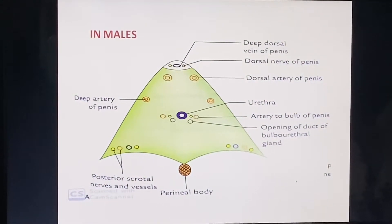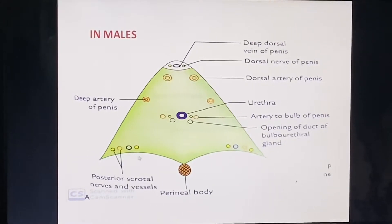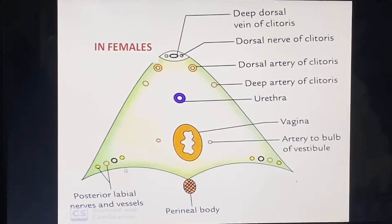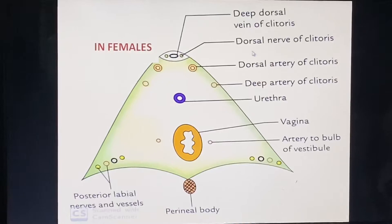In males, structures piercing the perineal membrane include: dorsal artery of the penis, urethra, artery to the bulb of the penis, opening of the duct of the bulbourethral gland, posterior scrotal vessels and nerves, and deep artery of the penis. Through the anterior gap: deep dorsal vein of the penis and dorsal nerve of the penis. In females, structures include: dorsal artery of the clitoris, deep artery of the clitoris, urethra, vagina, artery to the bulb of the vestibule, posterior labial vessels and nerves, and through the anterior gap: deep dorsal vein and dorsal nerve of the clitoris.